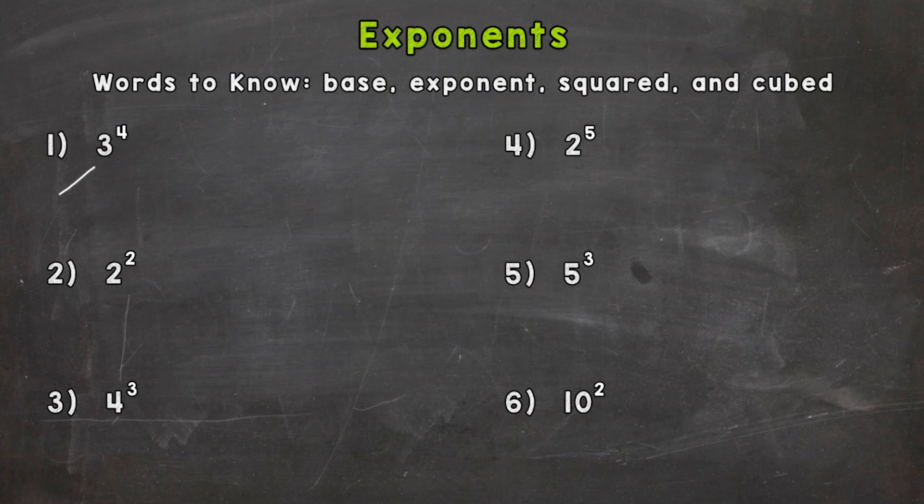So our big number right here, the three, this is our base and this little number here in the top right corner of our base is called the exponent. So exponents are used when we are multiplying the same number over and over again. And you'll know what that means here in a second.